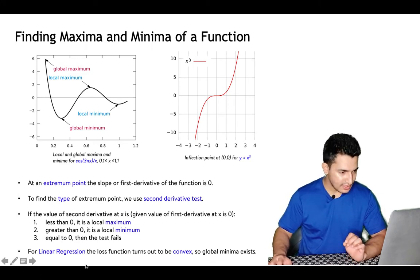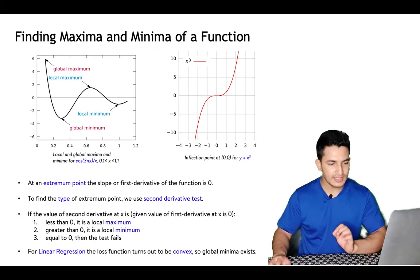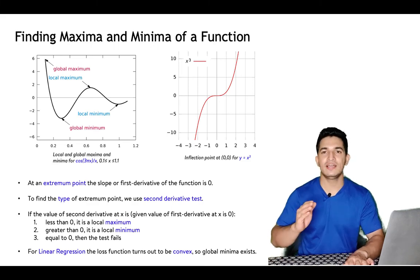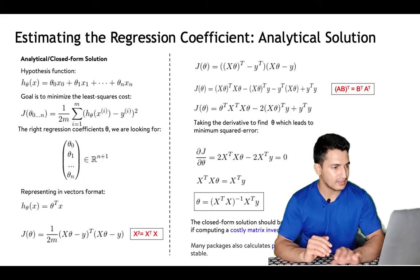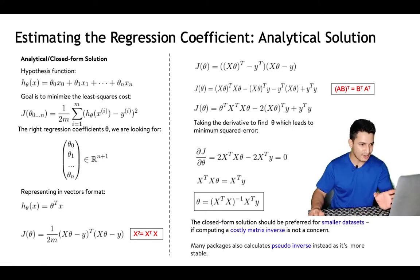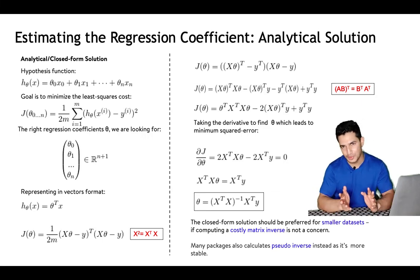The loss function for linear regression is a convex function, which means a global minima exists. That is the basis for the closed-form or analytical solution of linear regression. Looking at the derivation may seem intimidating, but it follows the same process we just reviewed — taking the derivative and equating it to zero.